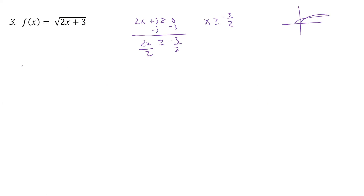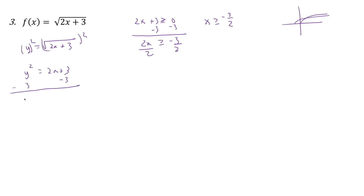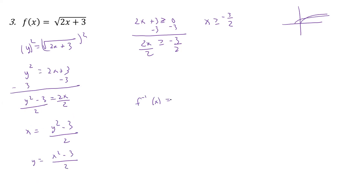Now let's solve this. So y equals the square root of 2x plus 3. We need to get rid of that square root, so we square both sides: y squared equals 2x plus 3. Subtract 3, then divide by 2, and so x equals y squared minus 3 over 2. Now we swap x and y, and we get y equals x squared minus 3 over 2. So f inverse of x equals x squared minus 3 over 2.